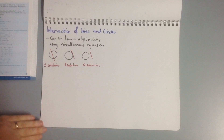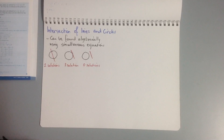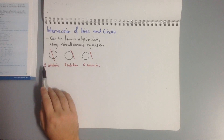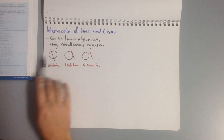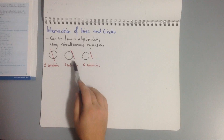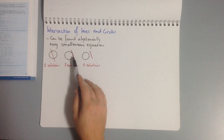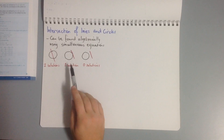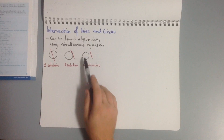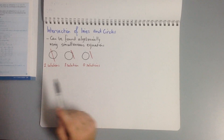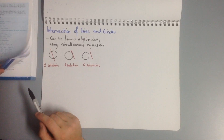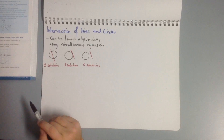Next is intersection of lines and circles, which can be found algebraically using simultaneous equations. Two solutions means the line intersects the circle twice; one solution means the line is tangent to the circle; no solution means they don't intersect at all. We'll look at a worked example.